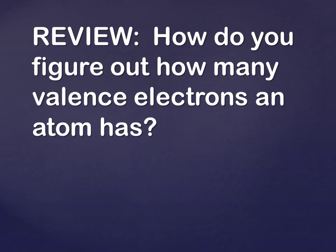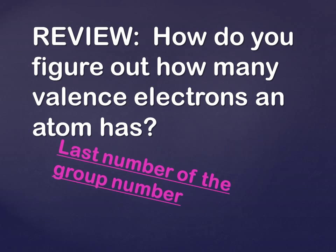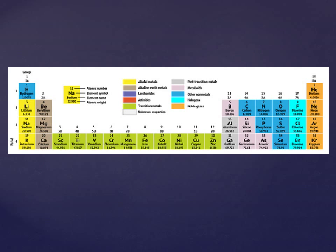So how do you figure out how many valence electrons an atom has? You could draw the atom out, but here's a shortcut: you look at the periodic table, and it's going to be the last digit of the group number. Group 1 has one valence electron. Group 2 has 2. When you get to group 13 — which has boron, aluminum, gallium — it has 3. Group 14 has 4, group 15 has 5, group 16 has 6, group 17 has 7, and group 18 has 8.